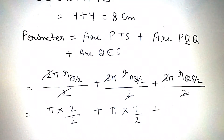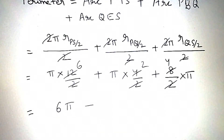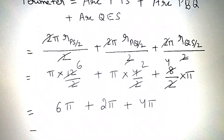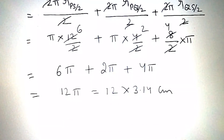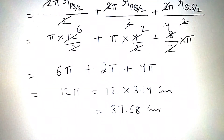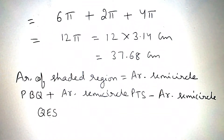Therefore the perimeter equals π times 4 plus π times 4 plus π times 4, which gives 12π. That is 12 into 3.14 centimeters. On multiplying, we get 37.68 centimeters.